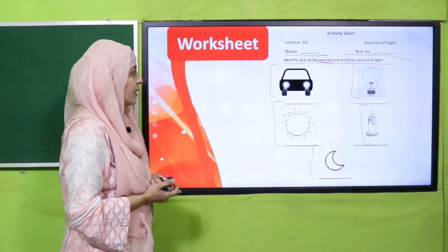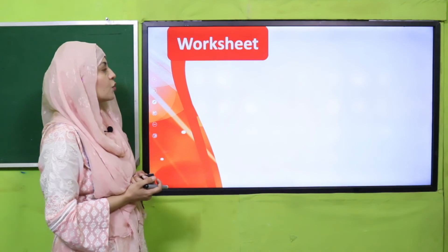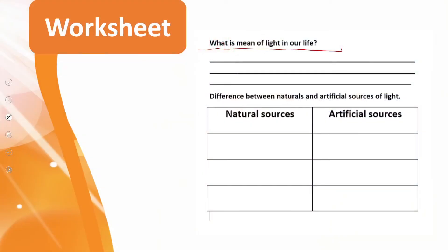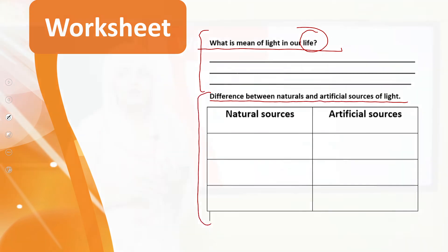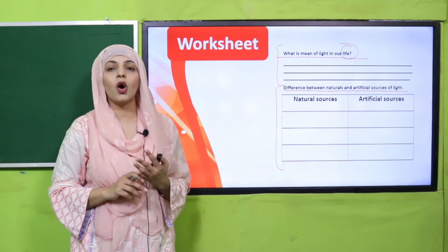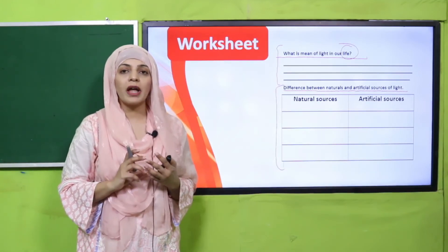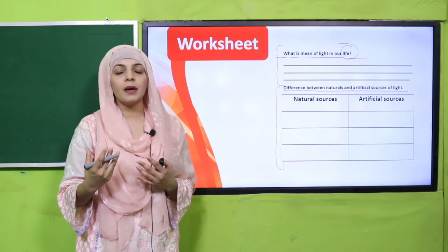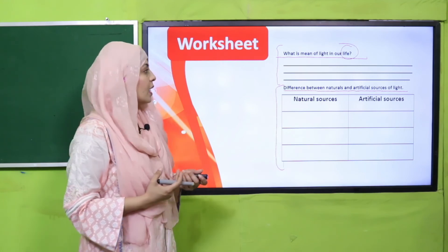I hope everybody has done it. Now let's move forward to the next part of the worksheet. What is meant by light in your life? Write it down. Then complete the difference between natural and artificial sources of light — give examples and differentiate between them.